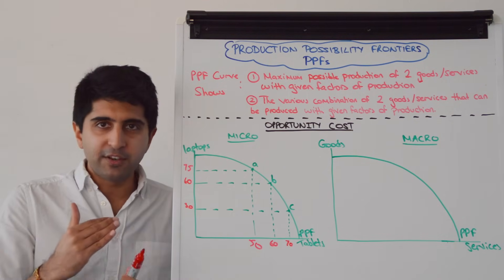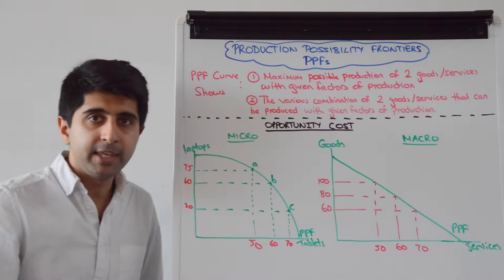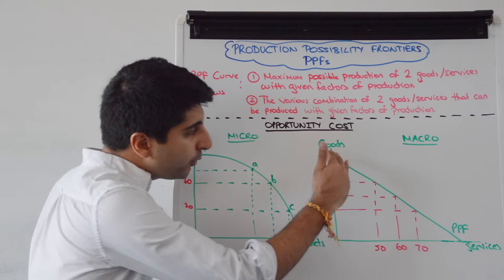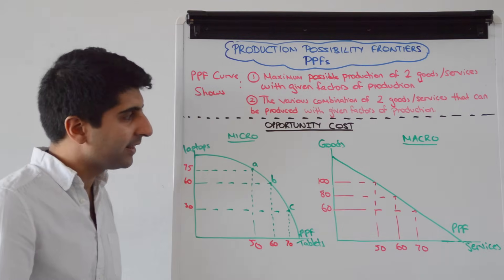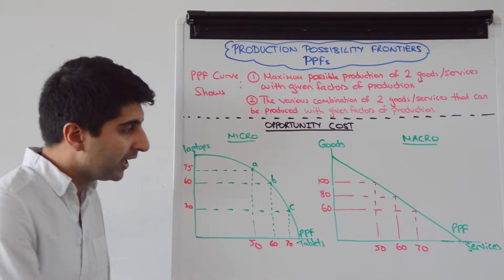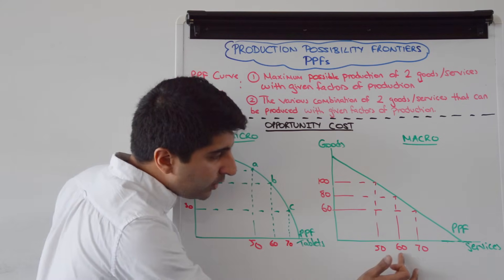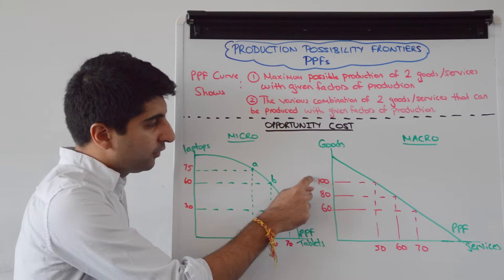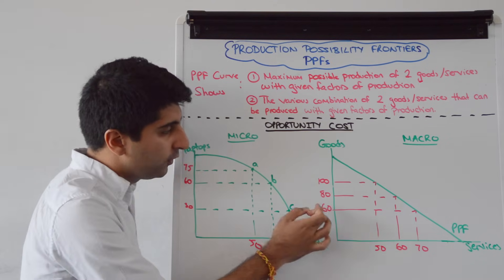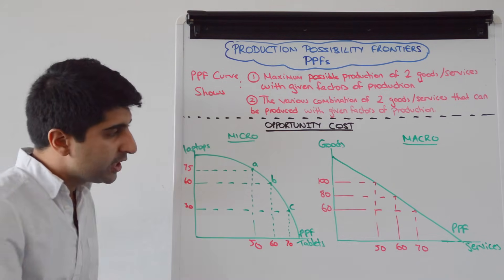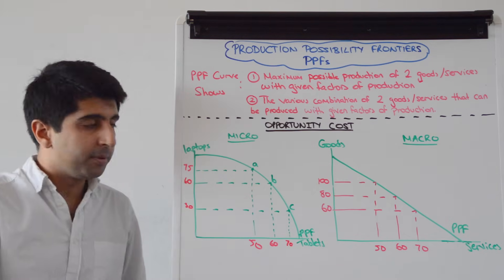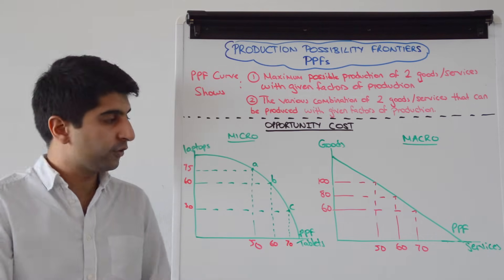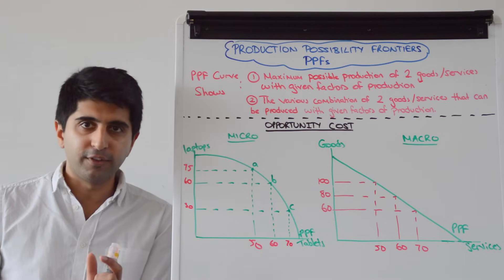What if we draw the PPF differently? If we draw our PPF linear — downward sloping and linear — it illustrates constant opportunity cost. Taking the same 10-unit increase in services each time, you can see that the units of goods given up are the same in each case: 20 units from 50 to 60 services, and 20 units of goods from 60 to 70 services. So a linear PPF illustrates constant opportunity cost, whereas a concave PPF represents increasing opportunity cost.